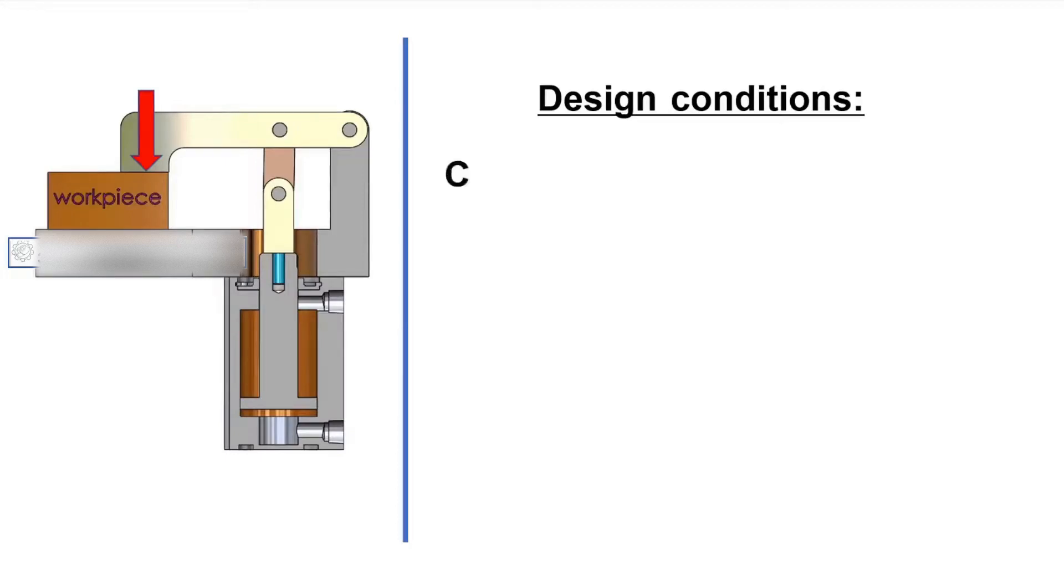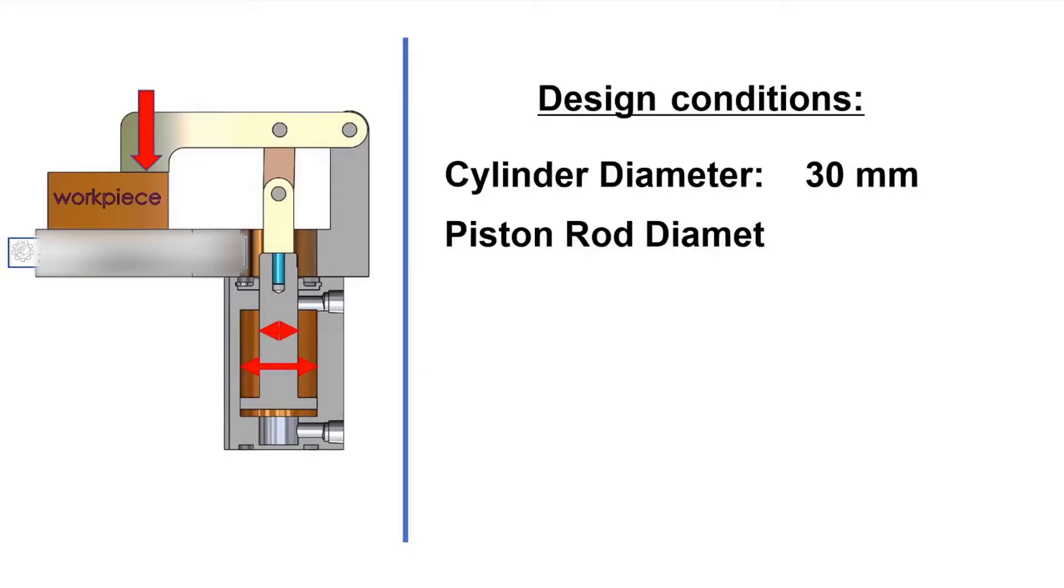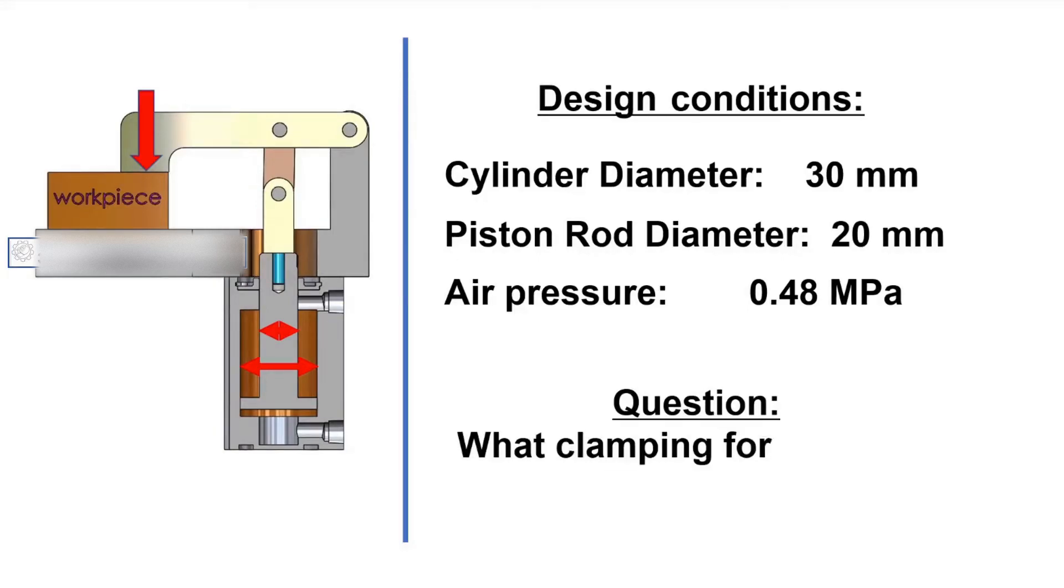We have design conditions: cylinder diameter 30 mm, piston rod diameter 20 mm, air pressure 0.48 MPa. Question: what clamping force can be guaranteed by this pneumatic cylinder?